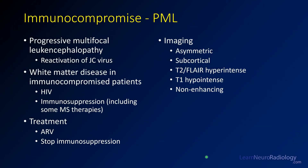Another special consideration is PML, or progressive multifocal leukencephalopathy — a white matter disease caused by reactivation of the JC virus. It's seen in immunocompromised patients, most commonly those with HIV or on immunosuppression, particularly some MS therapies. Treatment involves starting antiretroviral drugs to restore the immune system for HIV patients, or stopping immunosuppression for MS patients. Unlike HIV leukencephalopathy, PML tends to be asymmetric and subcortical, less periventricular and more subcortical in location, tends to be more T1 hypointense, and characteristically does not enhance.